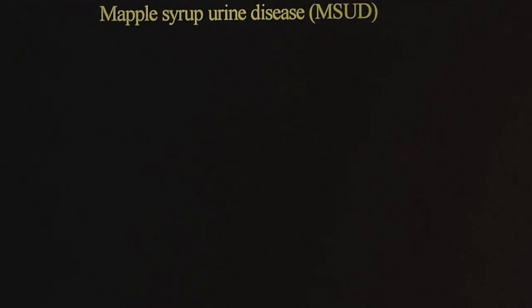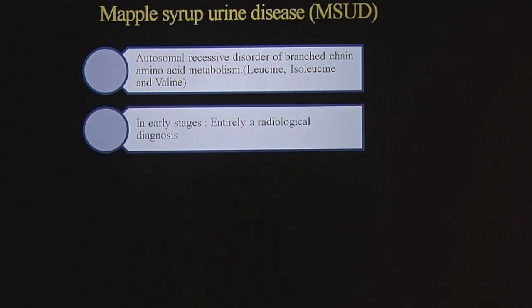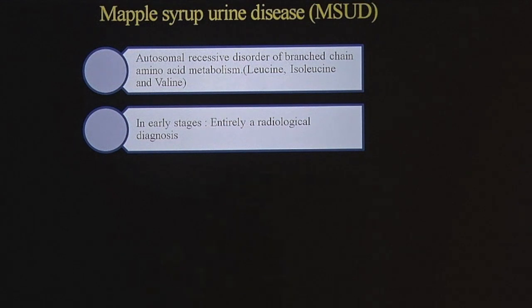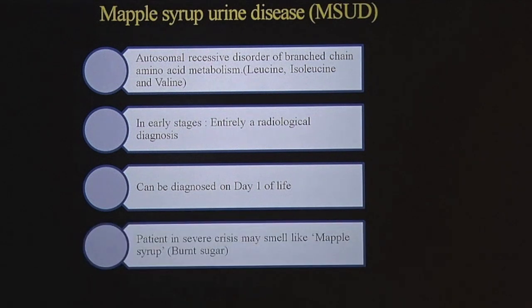The fifth condition affecting periventricular white matter is MSUD, or maple syrup urine disease. It is an autosomal recessive disorder affecting branched-chain amino acids — leucine, isoleucine, and valine. In the early stage, the diagnosis can be purely radiological. If a sibling has MSUD, even before the child comes into crisis, this condition can be diagnosed on fetal ultrasound or MRI, and can be diagnosed as early as day one of life when the child is asymptomatic.